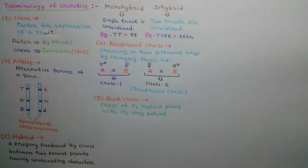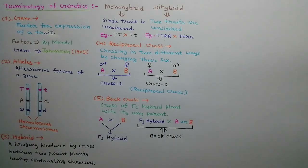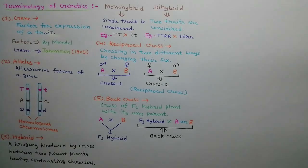When an F1 hybrid is crossed with any one of its parent plants, it is called a back cross. As shown in the diagram, F1 hybrid is produced by a cross between parent plants A and B. Now if this F1 hybrid is crossed with parent A or B, it is called a back cross.